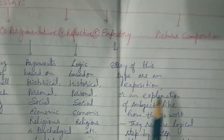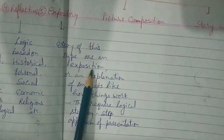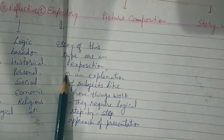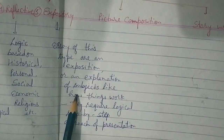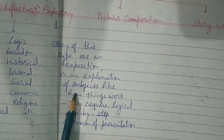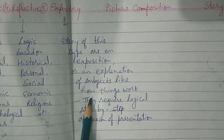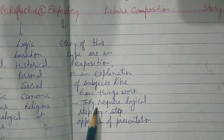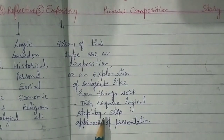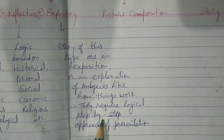Next is expository essays. Essays of this type are an exposition or explanation of subjects like how things work. They require a logical, step-by-step approach of presentation. Examples of such essays could be how to organize a birthday party or how to prepare a particular dish.